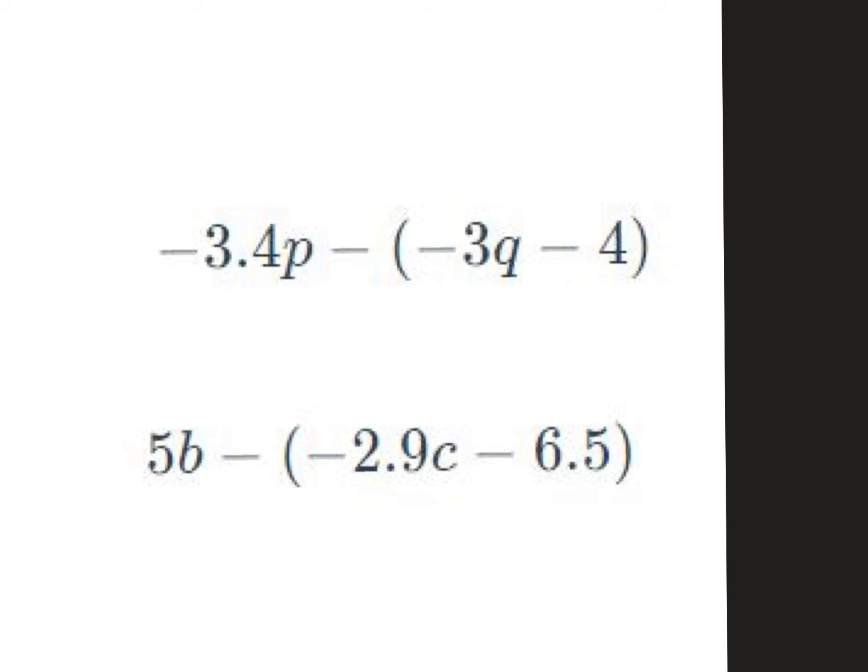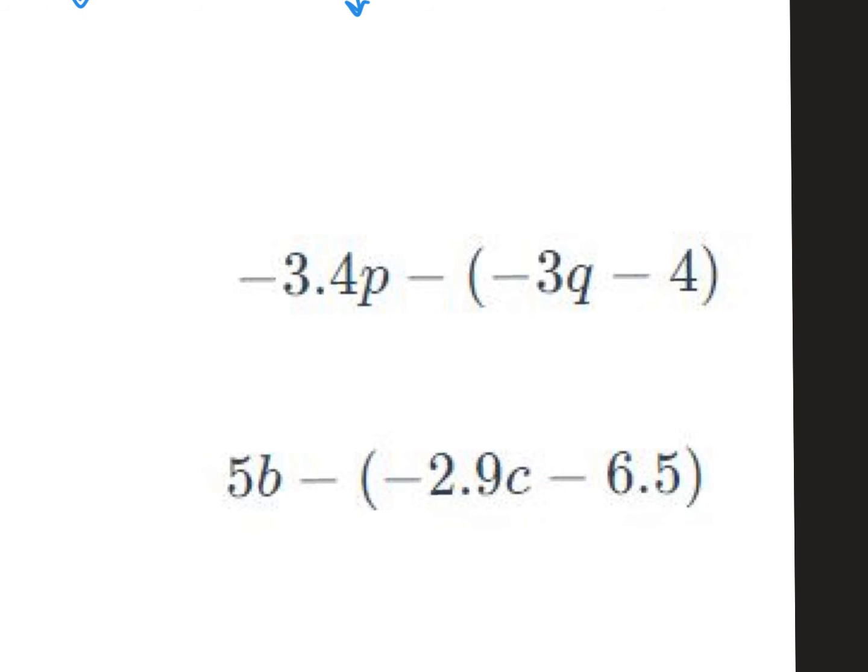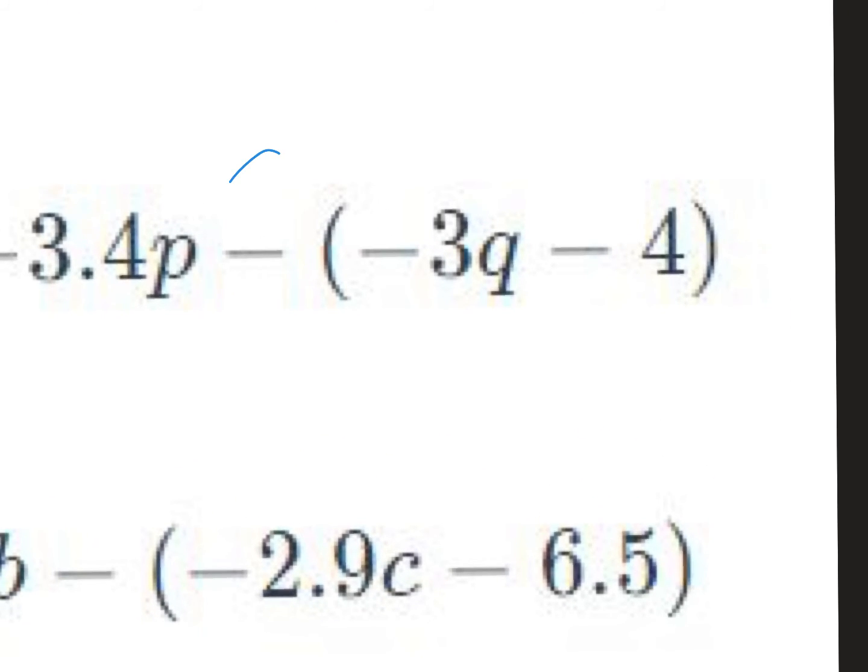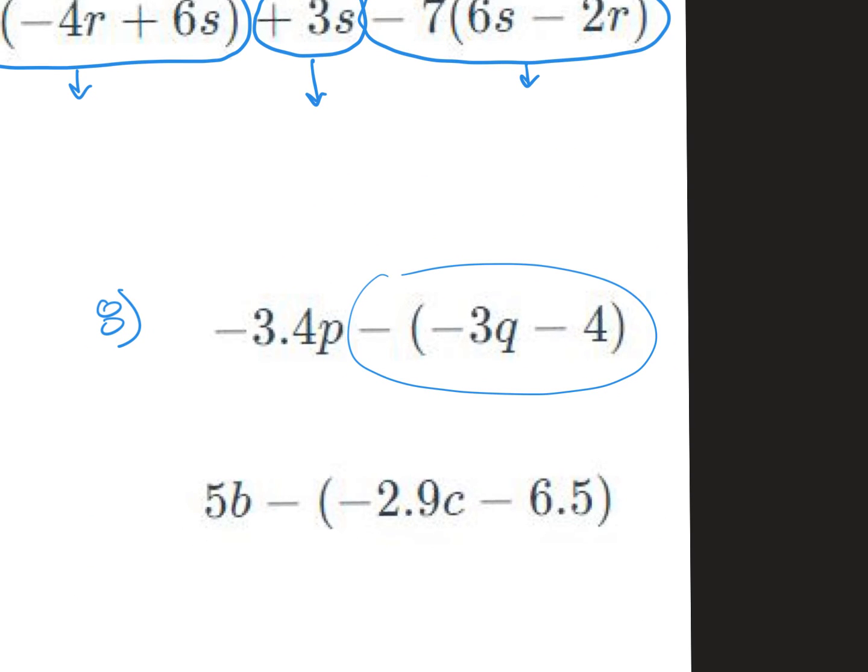Over here. This one is called distributing. We'll say number eight. This one's just like distributing right here. This is a distribution problem. But there's no number like right here. So what do we multiply by? Actually, it's just an invisible one, so we can just multiply by the negative. So right here, I just take the negative, and I say, okay, what's a negative times another negative? Well, that would be a positive 3q. And what's a negative times another negative 4? Well, that would be positive 4. So only the sign switches. So it's a negative 3.4p plus 3q minus 4. None of those can combine with each other because they're all different terms, and that's the answer. So this is called distributing a negative.